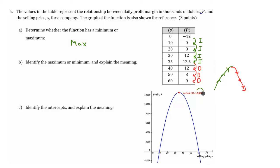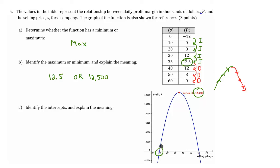Our maximum is going to be 12,500. In the table, it's represented right here by 12.5. Regarding the intercepts, we have no p-intercepts. We do have two intercepts for s: one right here at 10 and another one at 60. So those points will be (10, 0) and (60, 0).